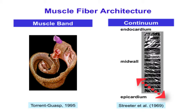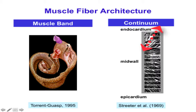Gradually, as you move through the wall, that helical pitch changes, getting lower near the middle where fibers run approximately circumferentially. At the inside—the endocardium—the fibers trace a right-handed helical pitch with an angle counterclockwise from the circumference by 60 to 90 degrees. There's no abrupt transition; it's a continuous variation—all one tissue with a varying orientation of muscle.